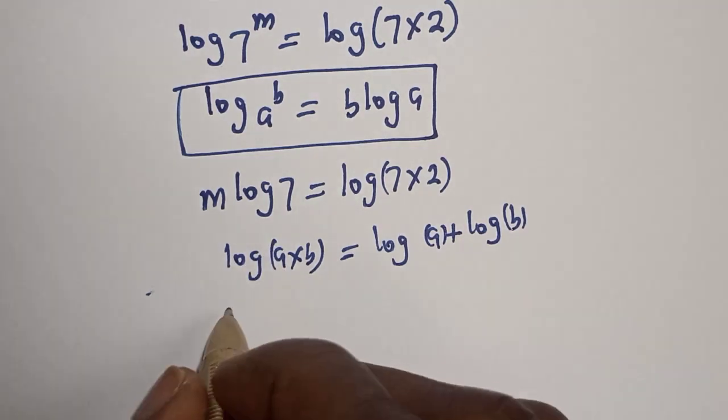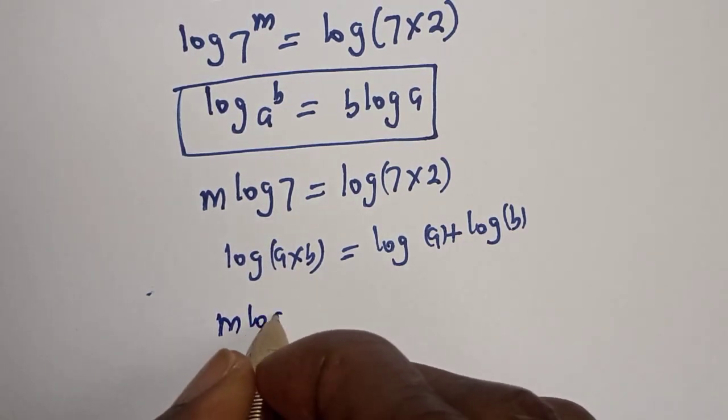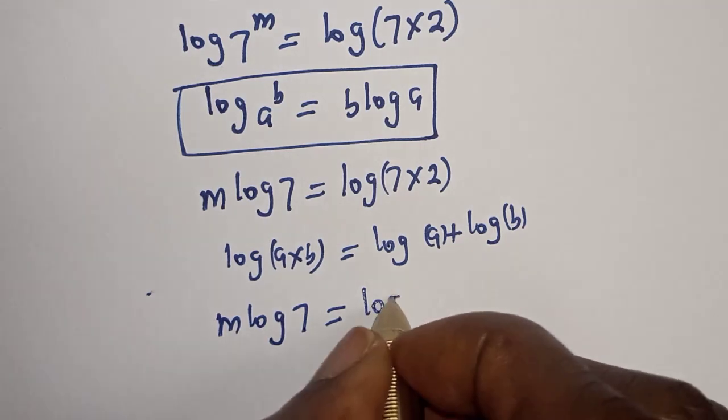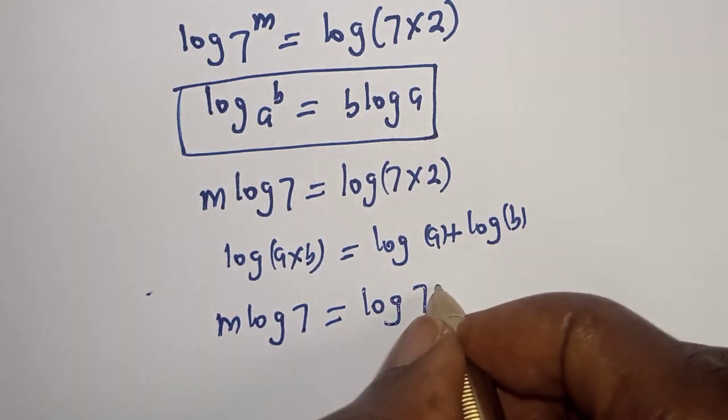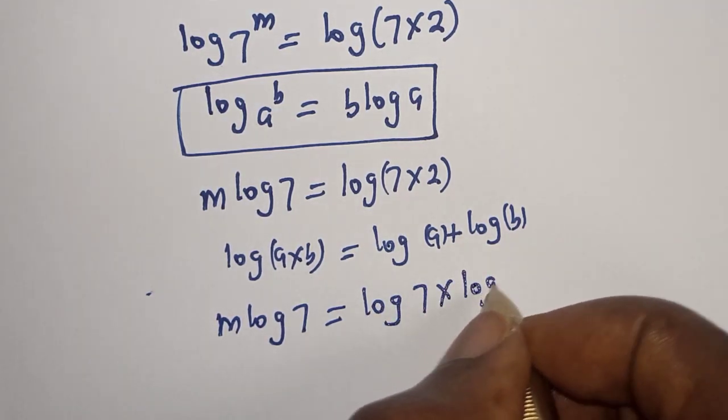So, this is m log 7 is equal to log 7 plus log 2.